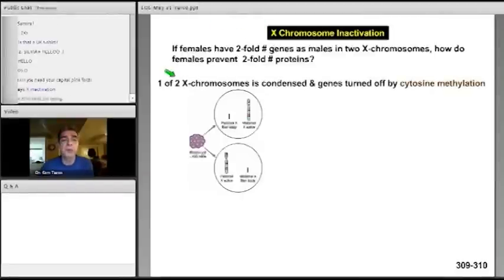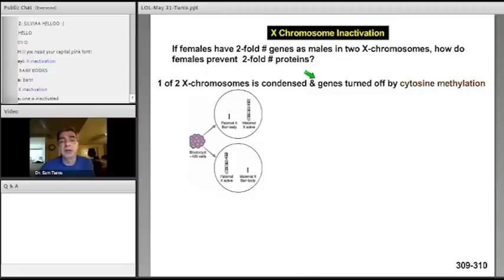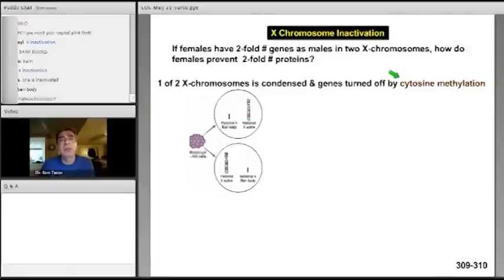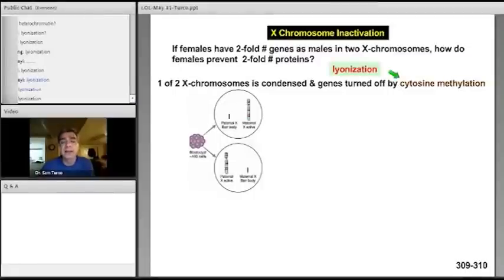As everybody knows, the reason is because one of the two X chromosomes is condensed and turned off and the genes on that X chromosome are turned off by cytosine methylation. Now, I have a question for you. In cell biology and genetics, what's the name of the process of X chromosome inactivation where one of the two X chromosomes is turned off by cytosine methylation? What is the process of making the bar body called? The answer, indeed, is lyonization.